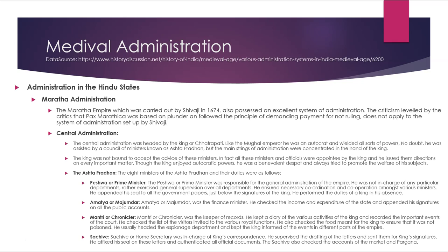The Amatya or Majumdar was the finance minister who checked the income and expenditure of the state and signed all public accounts. The Mantri or Chronicler was the keeper of records — he kept a diary of the king's various activities, recorded important court events, checked lists of visitors to royal functions, and ensured the king's food was not poisoned. He usually headed the espionage department and kept the king informed of events in different parts of the empire.